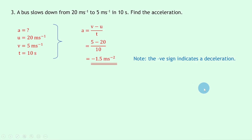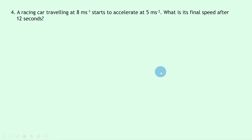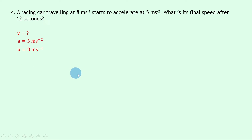Question four says a racing car traveling at 8 meters per second starts to accelerate at 5 meters per second squared. What is its final speed after 12 seconds? This time we're given the acceleration and asked to find the final speed. Writing down what we know: we're trying to find the final speed v, the acceleration a is 5 meters per second squared, the initial speed u is 8 meters per second, and the time t is 12 seconds.